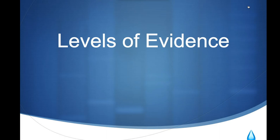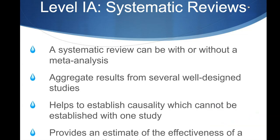We're going to talk about the four different levels of evidence. For Level 1a, we have two types of research studies that reach Level 1. The first is a systematic review, and that systematic review can be with or without a meta-analysis.